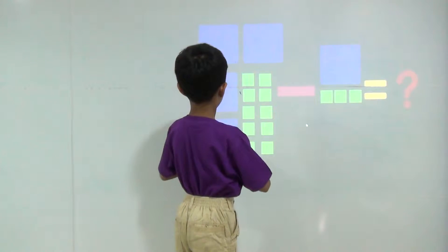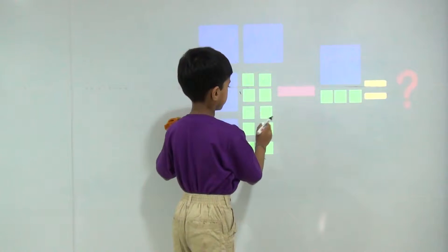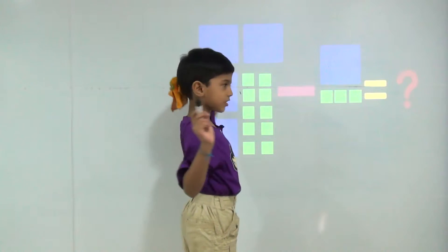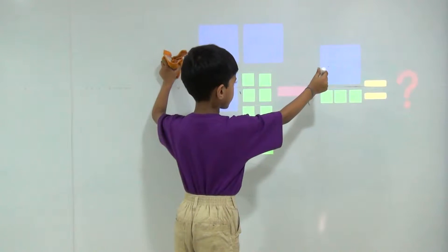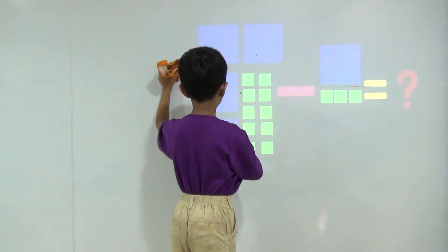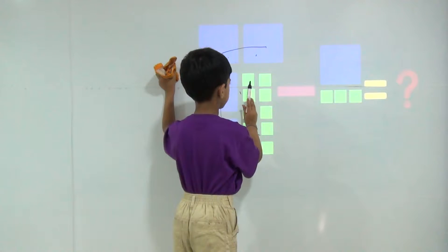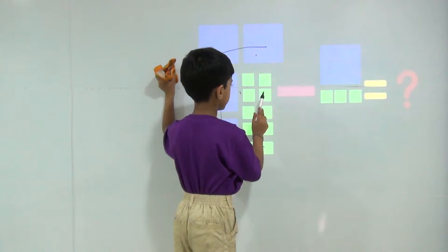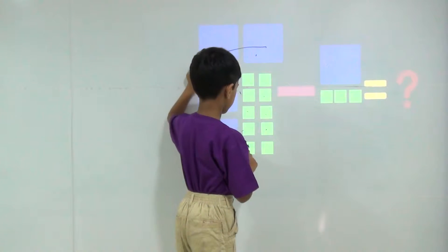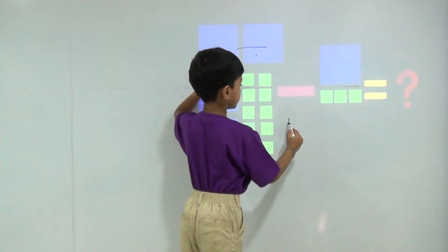There are 14 squares. My bhaiya takes four squares. These are all my bhaiya takes. So how many do I have? Let's count. 1, 2, 3, 4, 5, 6, 7, 8, 9, 10. So the answer will be 10.